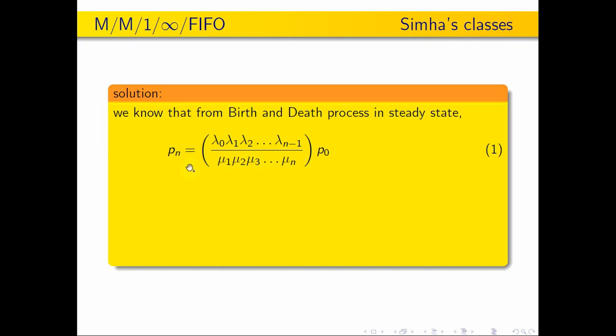So what do we do with the steady state values? Now, over this model, we define lambda and mu. For this model, we define lambda n is equal to lambda for all n, and mu n is equal to mu for all n.